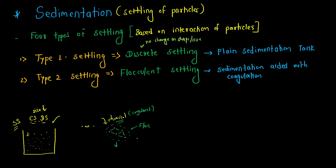This whole process is called coagulation. So these big particles, or flocks, which are settling down — this type of settling is called Type 2 settling, and it is found in sedimentation aided with coagulation.